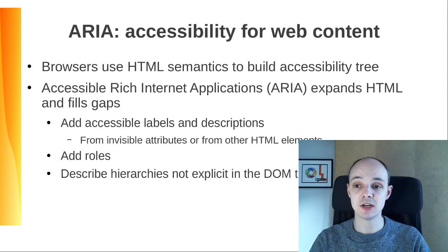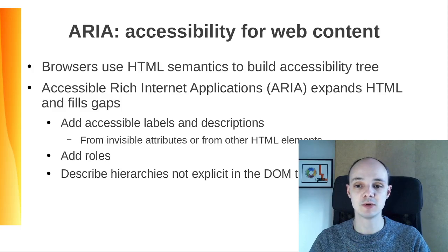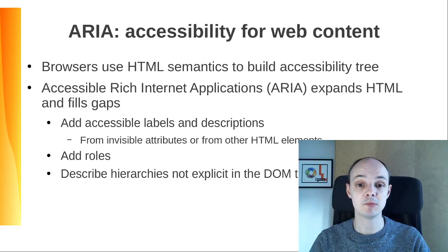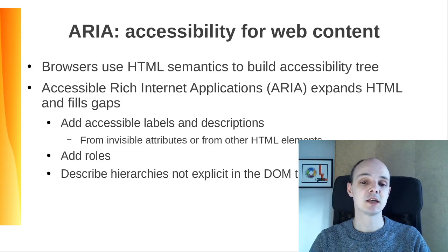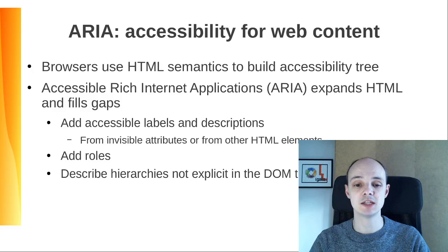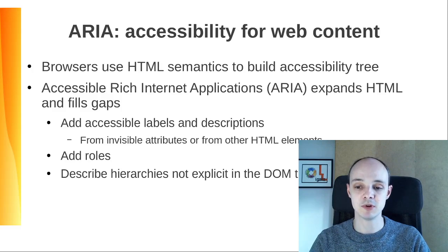Sometimes HTML semantics are not enough, so we have the ARIA standard to expand HTML and fill gaps. It can be used to add accessible labels and descriptions from invisible attributes or from other HTML elements. Notice that HTML semantics should be used when available, like in the previous example. ARIA can be used to add roles — for example, a piece of text that briefly appears in a web application saying 'changes saved.' The ARIA alert role can be used to notify ATs about this message and make it be read immediately. It can also be used to describe hierarchies not explicit in the DOM tree, for example, to indicate the correct place in the document hierarchy of a piece of floating text.